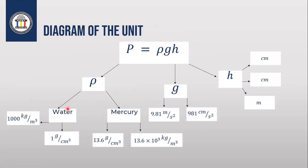For water, ρ is constant: 1,000 kilograms per meter cubed when using SI units, or 1 gram per centimeter cubed in CGS units. For mercury, ρ is 13.6 grams per centimeter cubed, or equivalently 13.6 × 10³ kilograms per meter cubed.